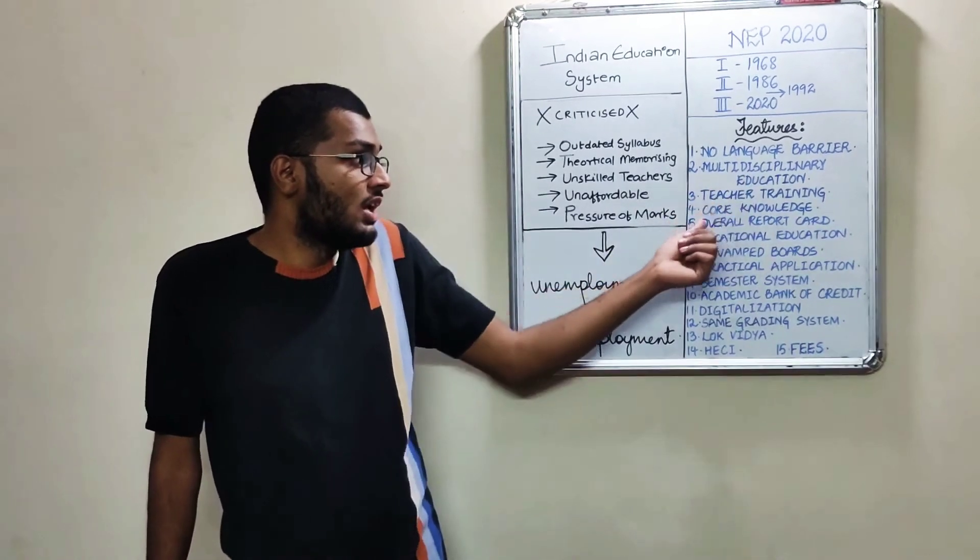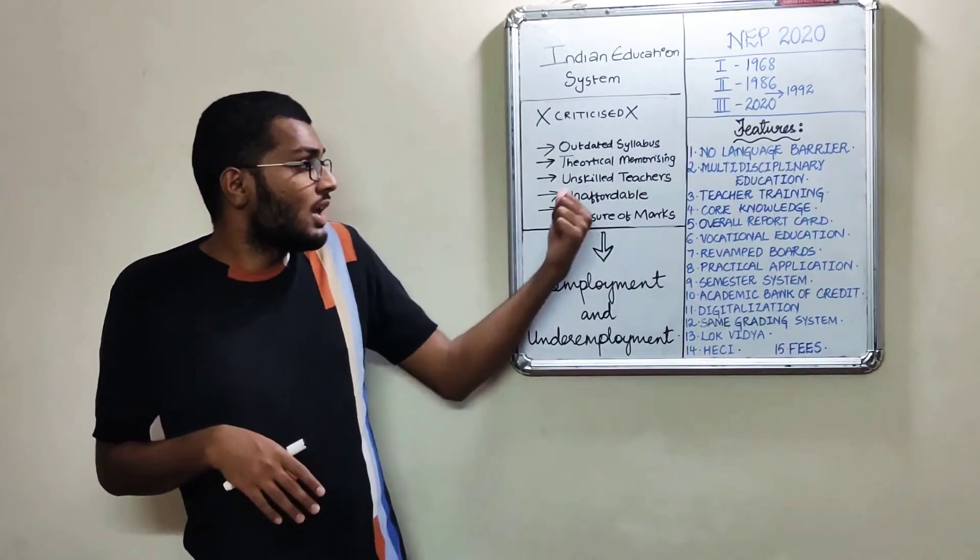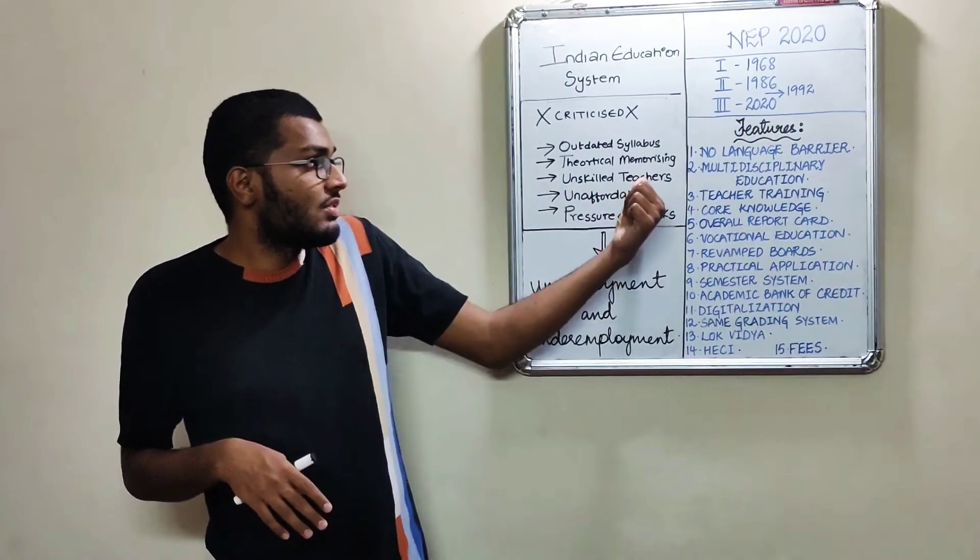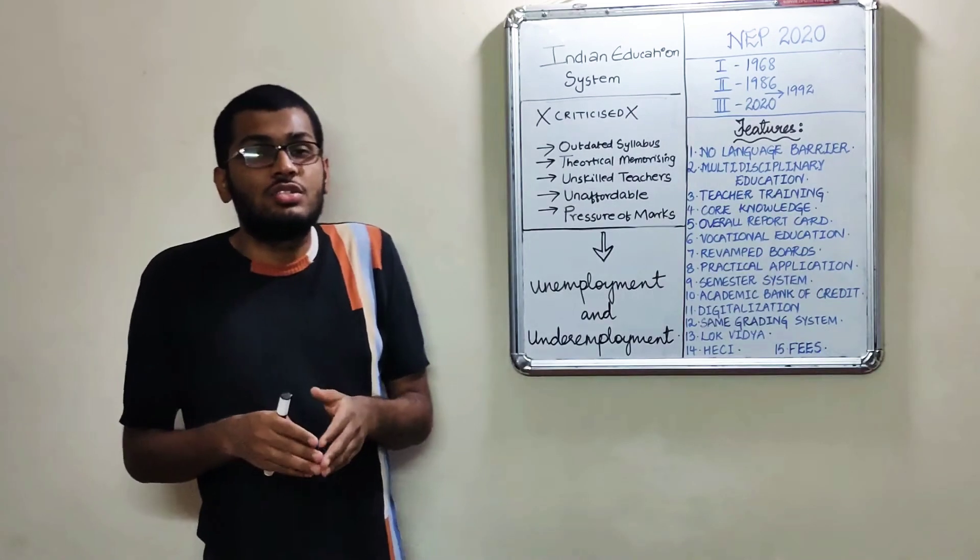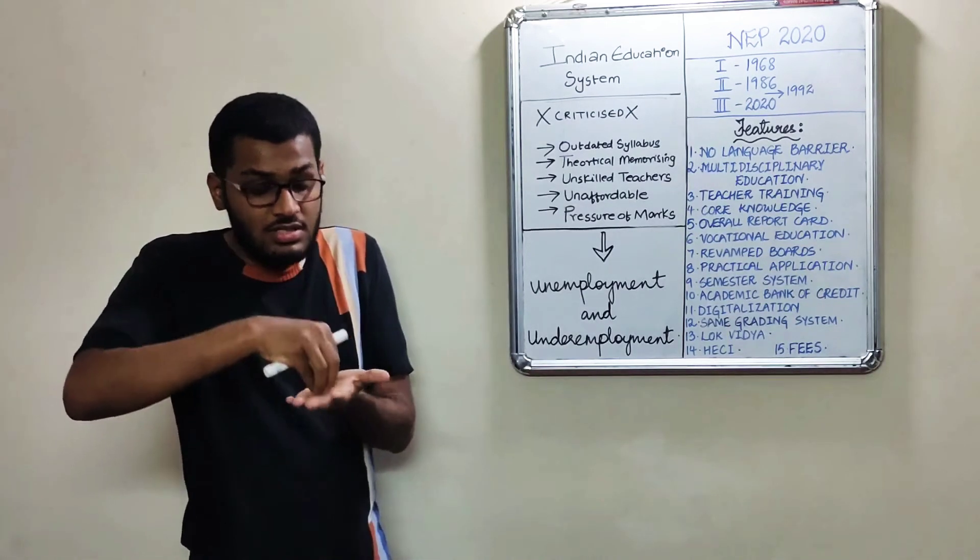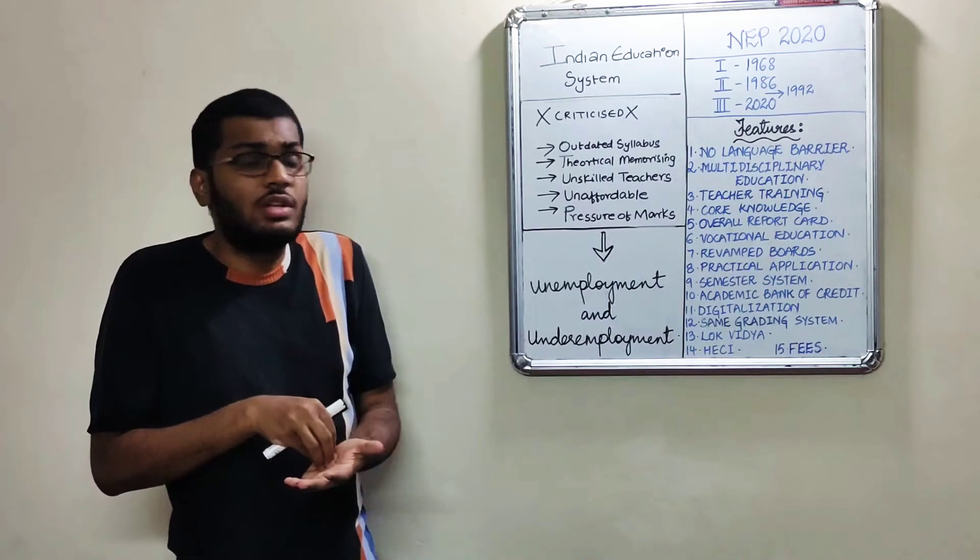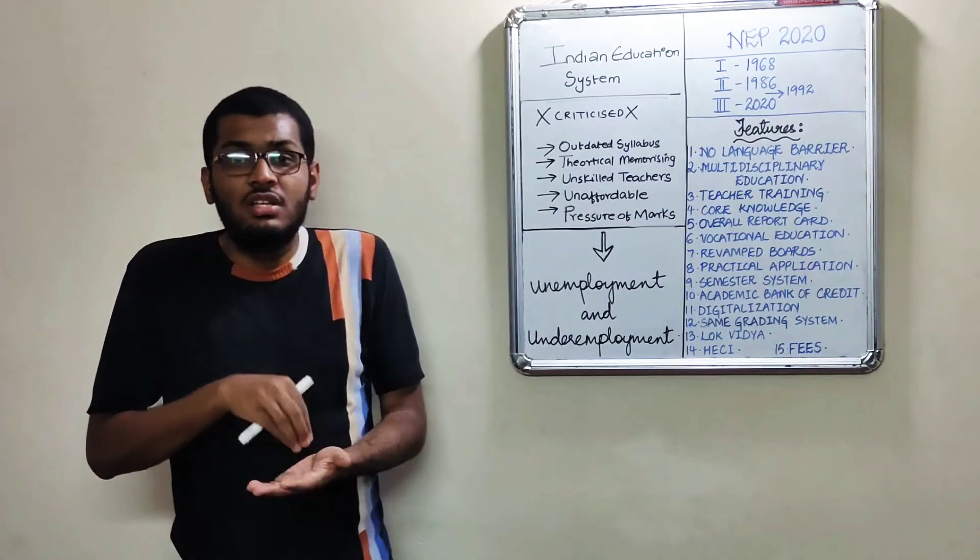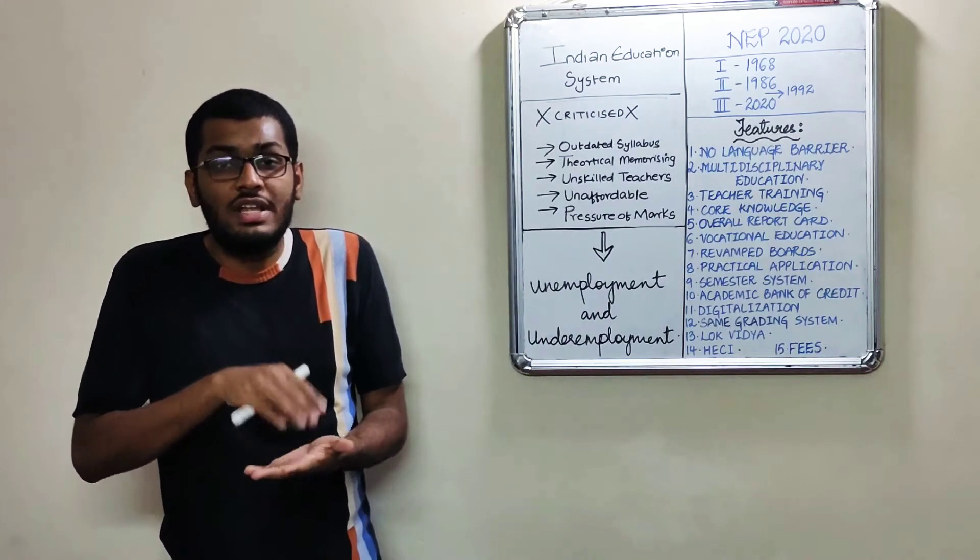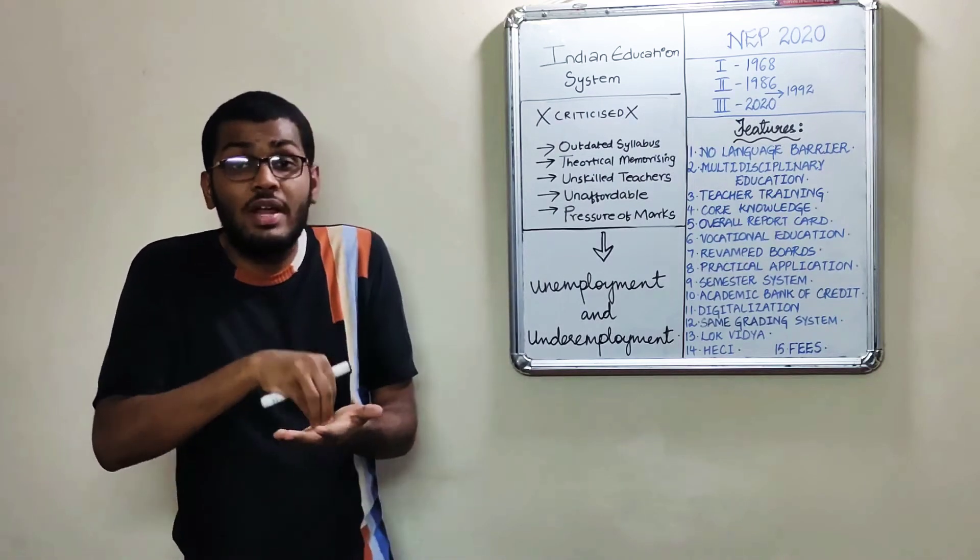Number three is teacher training. Teacher training is what I have told today - unskilled teachers is one of the criticisms, so teacher training will focus so that teachers are trained time to time and they have a skilled set of qualifications. By 2030 you need a Bachelor of Education, that is a 4-year degree, that is compulsory in order to become a teacher, in which you will learn how to teach.